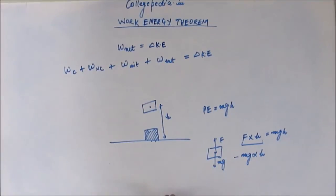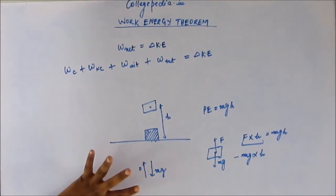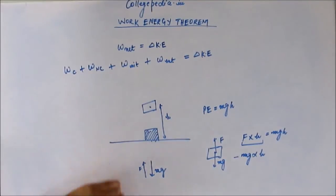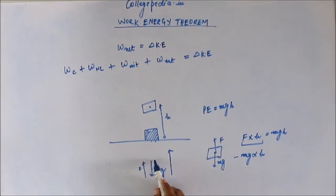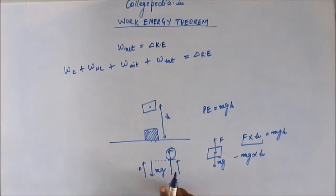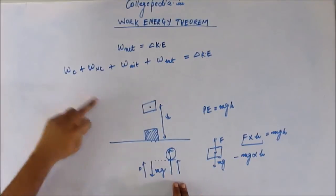Now if we want the block to acquire some kinetic energy, we will have to apply a force greater than Mg. If we apply a force F equal and opposite to Mg, the forces are balanced and the block gets no acceleration. But if we want the velocity to increase, there has to be acceleration and a net force. If we increase the external force beyond Mg, this extra amount of force will actually give velocity and kinetic energy to the block.